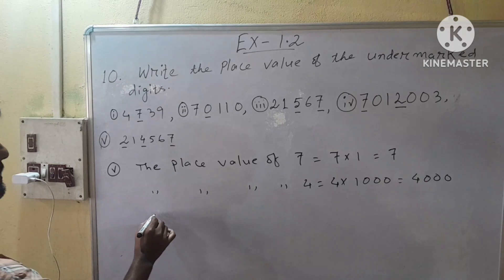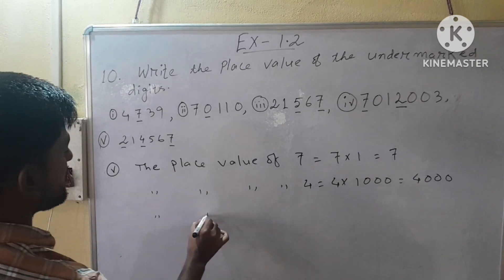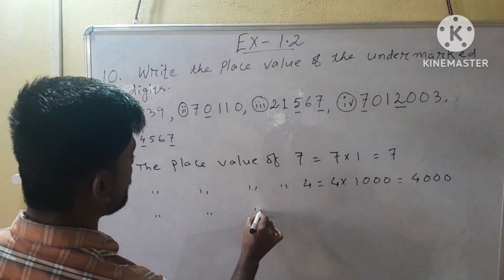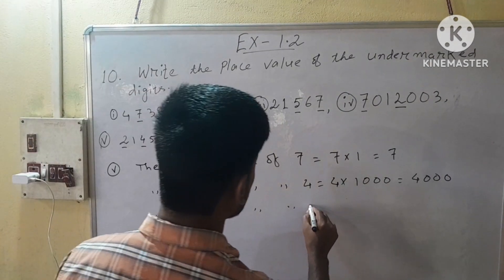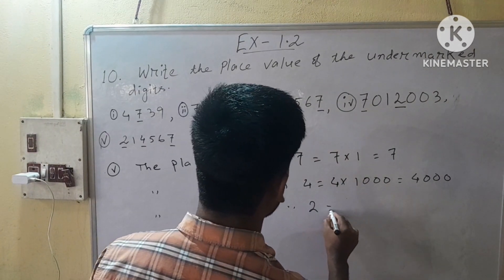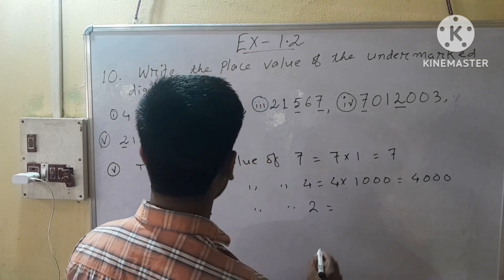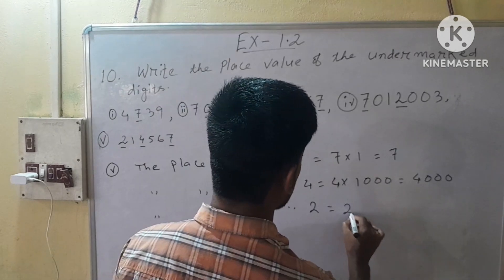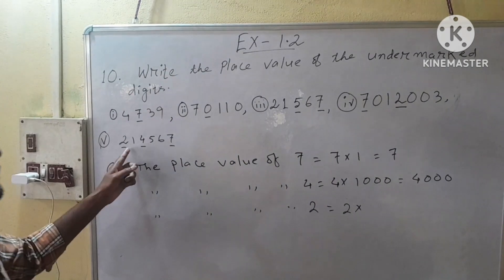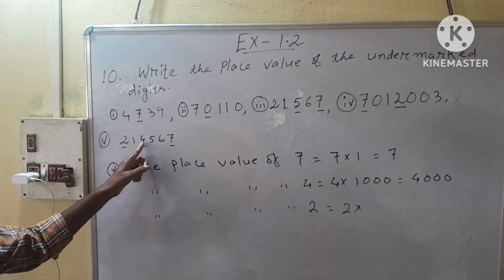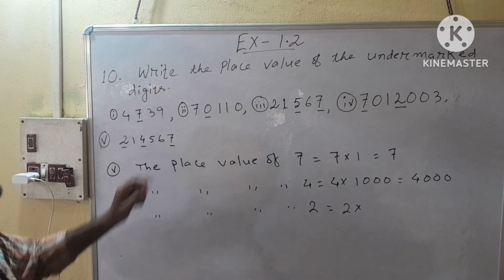Next, the place value of 2 is equal to 2 into... After 2 we have 5 digits.